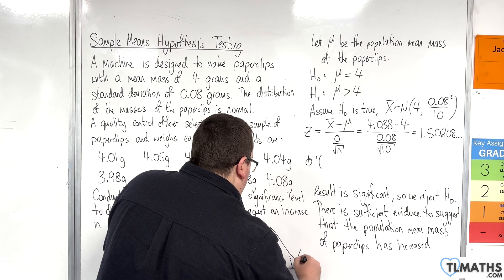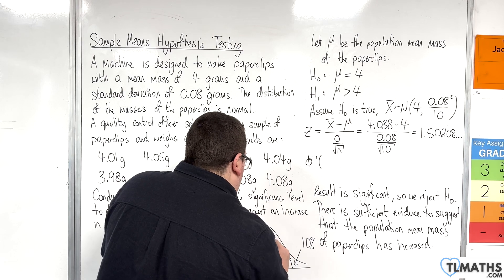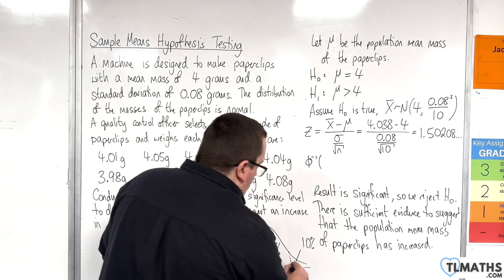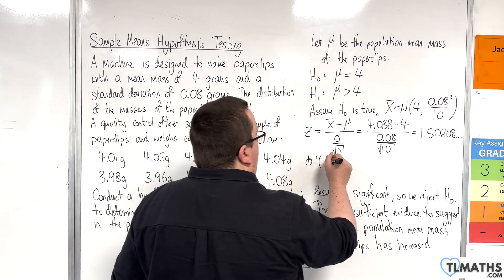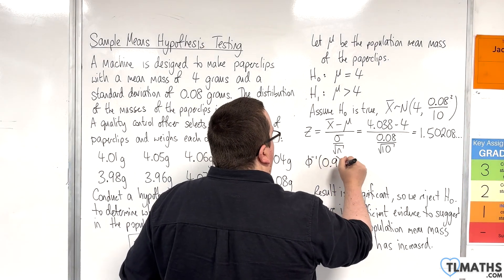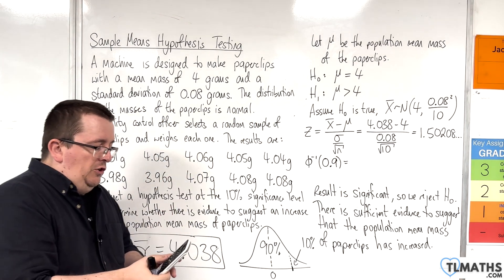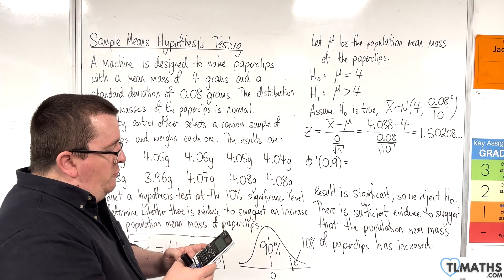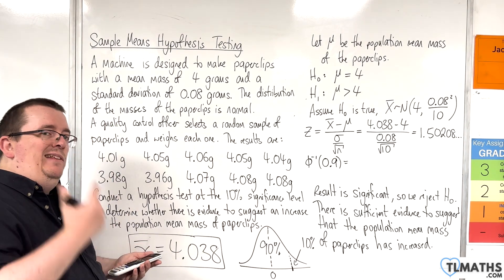Because that's 10%, this bit is then 90%. So the value in order to get that value, the value that I need to put in the error in my calculator is 0.9. So I'm going to distributions, inverse normal, error is 0.9, σ is 1, mean is 0 because we're using the standard normal distribution, and that is 1.2815.